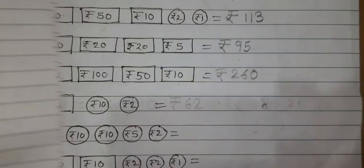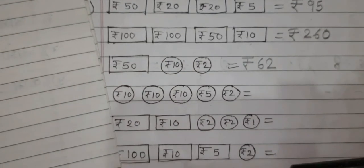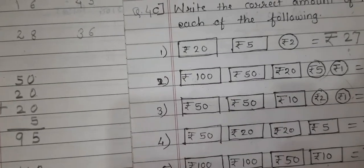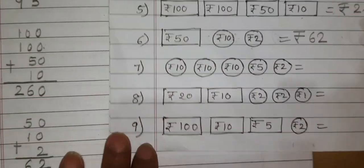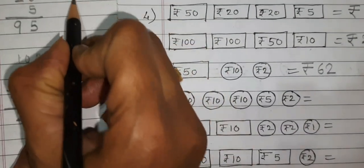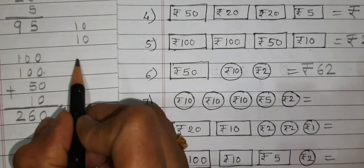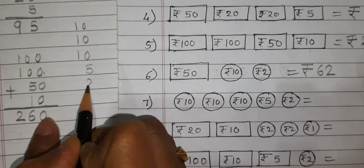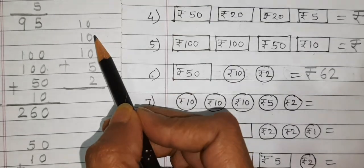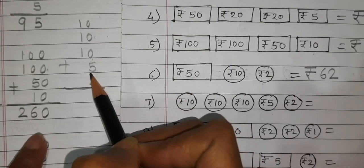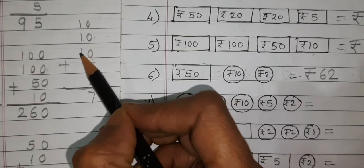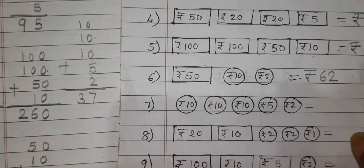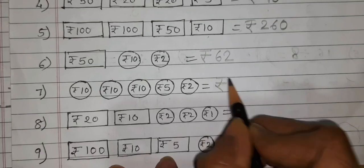Next one: Rupees 10, Rupees 10, Rupees 10, Rupees 5 and Rupees 2. Write and add: ones column 0 plus 0 plus 5 plus 2 is 7. Tens column: 1 plus 1 plus 1 is 3. So our answer is Rupees 37.